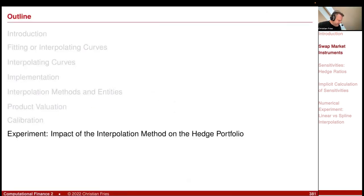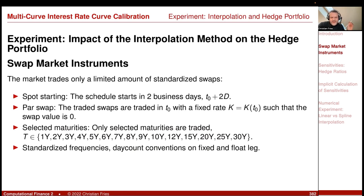What is a nice interpolation entity? Should we interpolate the value, or some transformed coordinate like the logarithm of the value? I would like to conclude this discussion on curves with a small experiment showing you the impact of the interpolation method on the hedge ratio, on the sensitivity, on the hedge portfolio. This is actually what a trader does.